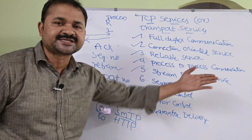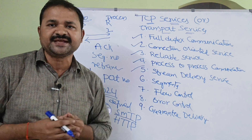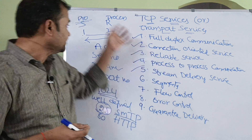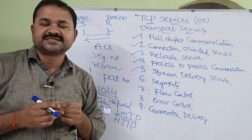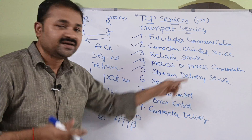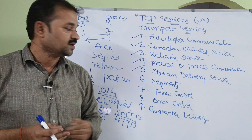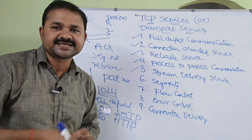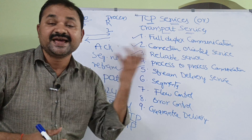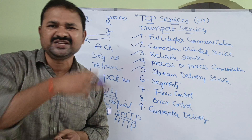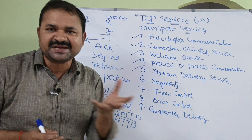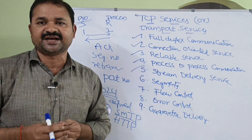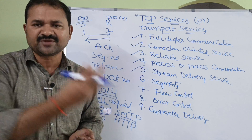TCP provides stream delivery service. A stream means a collection of data — specifically, a collection of bytes. The sender process can send data as a stream of bytes, and likewise the receiver process can also receive data as a stream of bytes. To support this, a buffer is used. The sender sends a stream of bytes, those bytes are stored in the buffer, and the receiver consumes the data from the buffer.